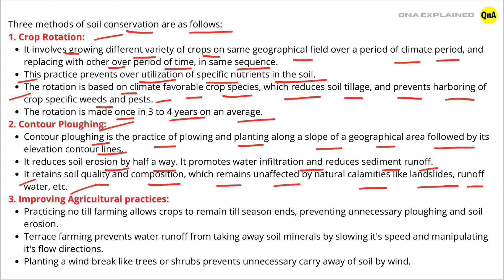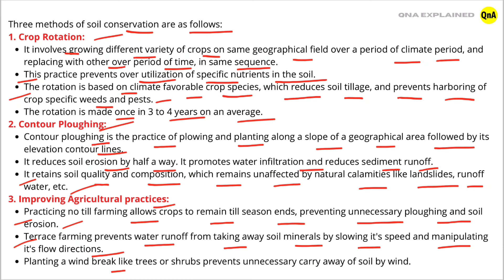Third is improving agricultural practices. Practicing no-till farming allows crops to remain till the season ends, preventing unnecessary plowing and soil erosion. Terrace farming prevents water runoff from taking away soil minerals by slowing its speed and manipulating its flow direction. Planting a windbreak like trees or shrubs prevents unnecessary carry-away of soil by wind.